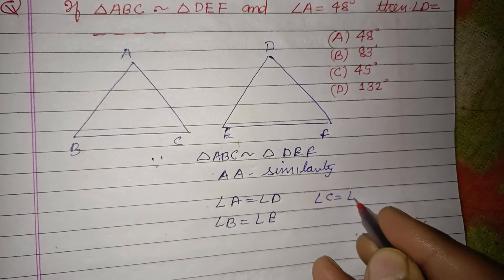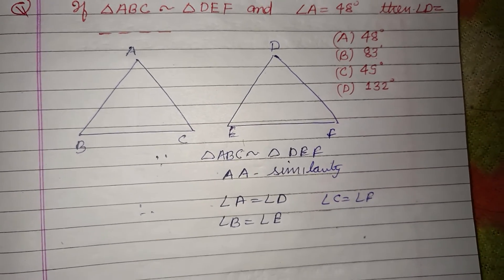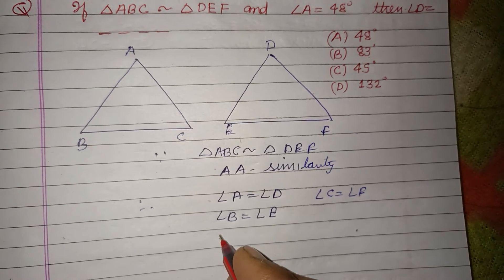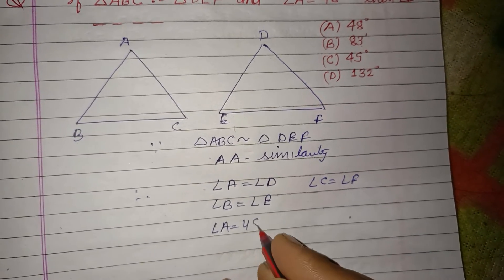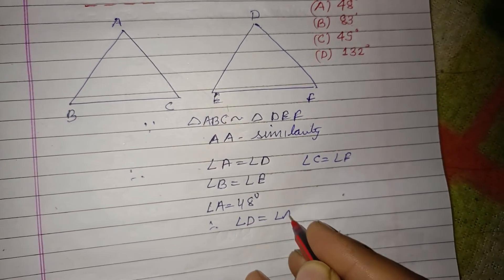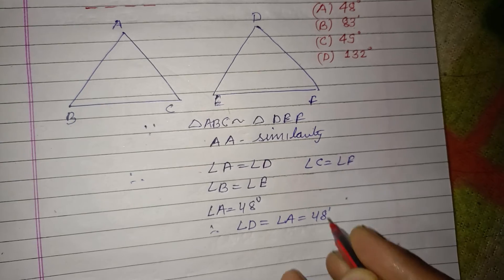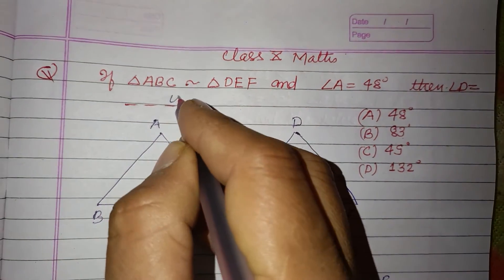So here, angle A equals angle D. Angle A is given to us as 48 degrees, therefore angle D equals angle A, which equals 48 degrees. So angle D is also 48 degrees by similarity, and this answer will be 48 degrees.